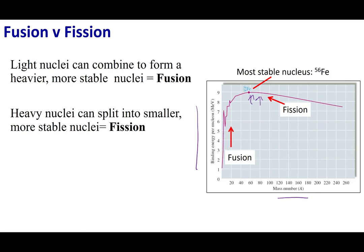We want to reach the lowest energy form, which is iron-56. Anything lighter than iron-56 — like hydrogen and helium — has a tendency to combine with other nuclei to get bigger and reach iron-56. If we're heavier than iron-56, like mercury or uranium, we want to break apart and shed some of the nucleus to become iron-56.